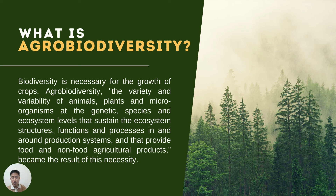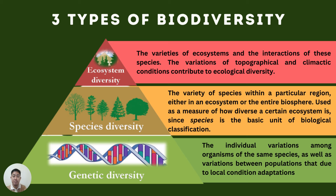There are three types of biodiversity: genetics, species, and ecosystem biodiversity. The first and lowest level is genetic diversity, which is actually the foundation of biodiversity. Genetic diversity refers to individual variations among organisms of the same species, as well as variations between populations due to local conditions and adaptations. These variations among individuals are passed from one generation to the next.